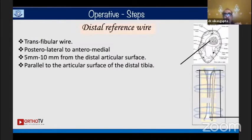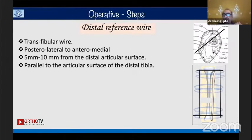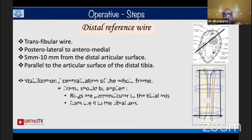For the distal reference wire, preference is a transfibular wire placed from posterior to anteromedial, about five to ten millimeters from the distal articular surface and parallel to the distal articular surface of the tibia.